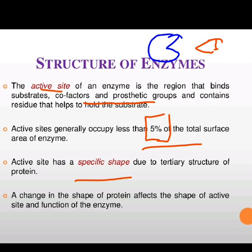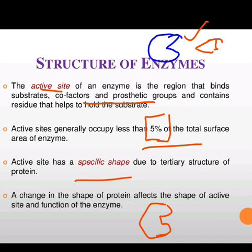A change in the shape of the protein due to increase in temperature or change in pH means there is a change in the active site of the enzyme. If this was the initial shape and now we have changed the active site, then this active site is no longer going to bind with that particular substrate. So whenever the shape of the active site is changed, the functioning of the enzyme is going to be affected.